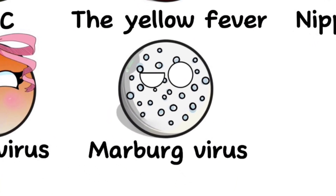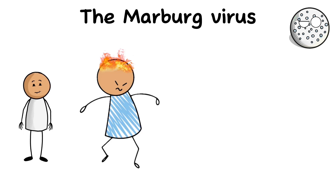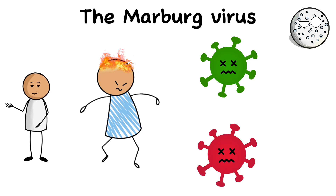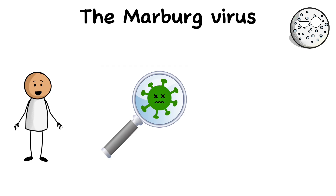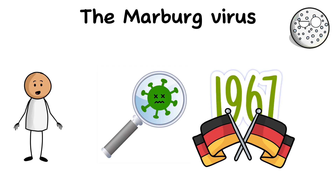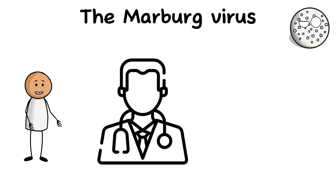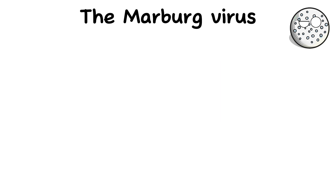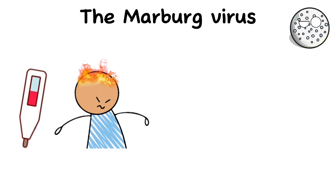The Marburg virus. The Marburg virus leads to acute hemorrhagic fever, similar to the Ebola virus. It also belongs to the filoviridae family. The Marburg virus was first detected in 1967 in Marburg, Germany, in cases of acute hemorrhagic disease in medical professionals involved in the treatment of green monkey tissue samples. Symptoms included fever, headache, and muscle pain.